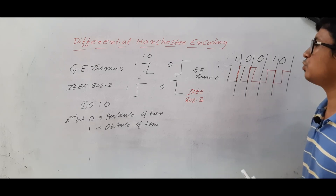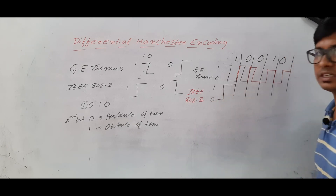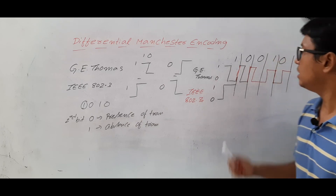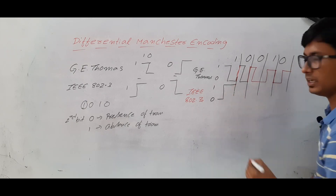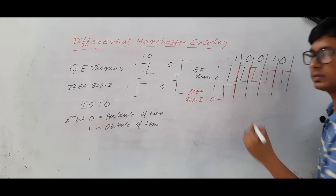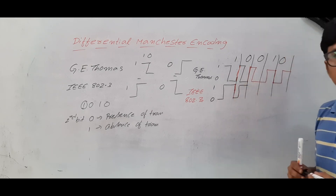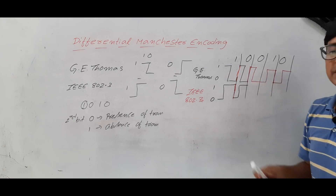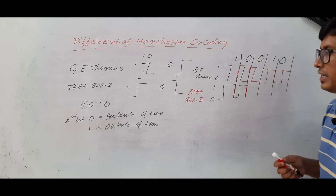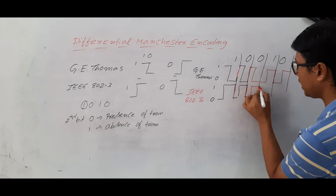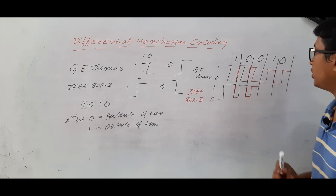For the example, the first bit is 1, so you represent reverse of Z. The second bit is 0, which means presence of transition — you are at the high and you have to go to low, then from low to high you go, and represent. Then again you got a 0, again presence of transition — you are at the high, again you go to the low, then represent low to high. So 1, 0, 0 have been represented according to IEEE 802.3.